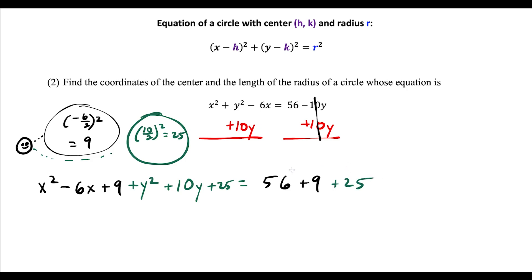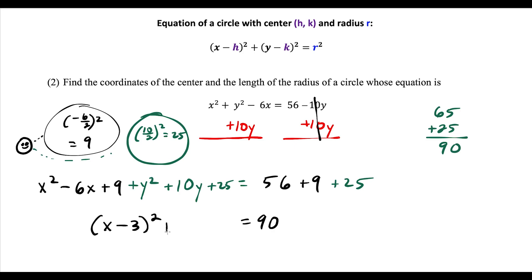On the right side, 56 plus 9 plus 25 gives us 90. On the left, x squared minus 6x plus 9 factors as x minus 3 squared. Then y squared plus 10y plus 25 factors as y plus 5 times y plus 5, which is y plus 5 squared.